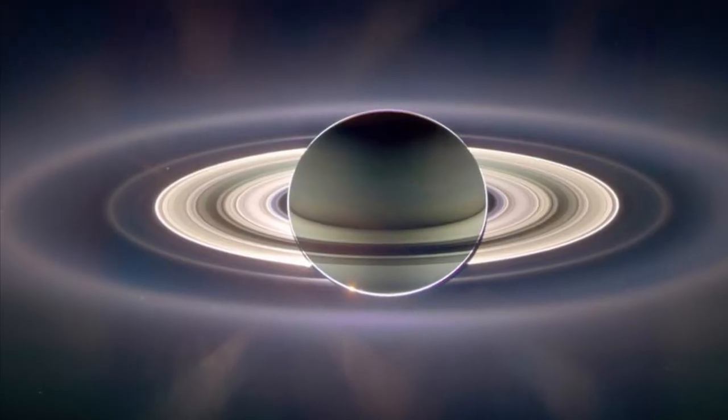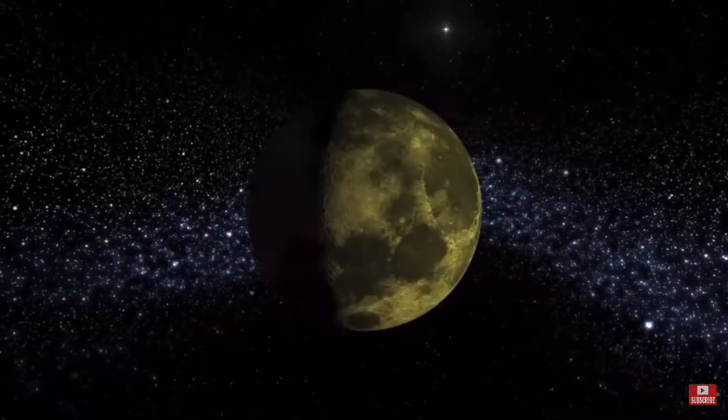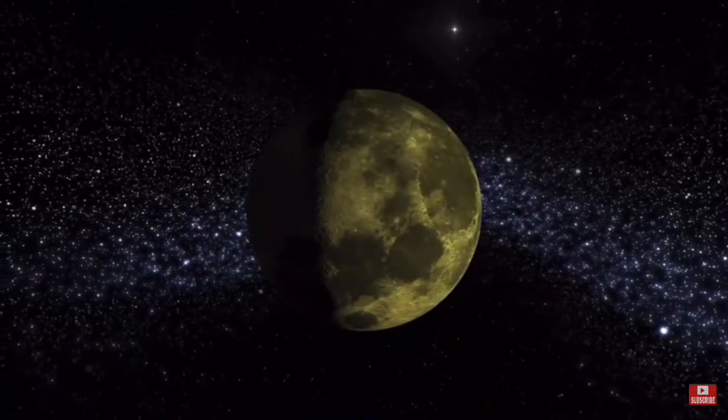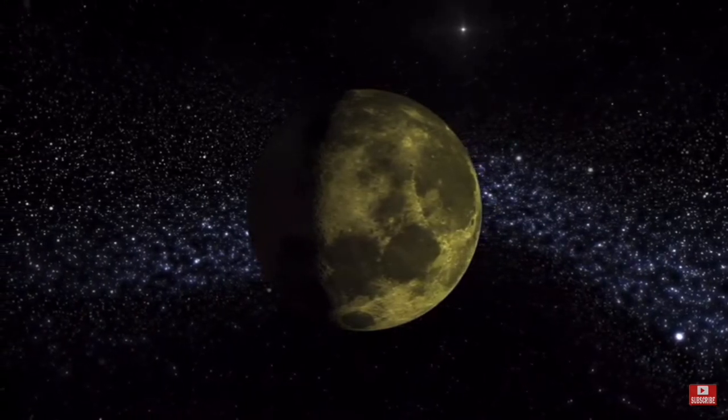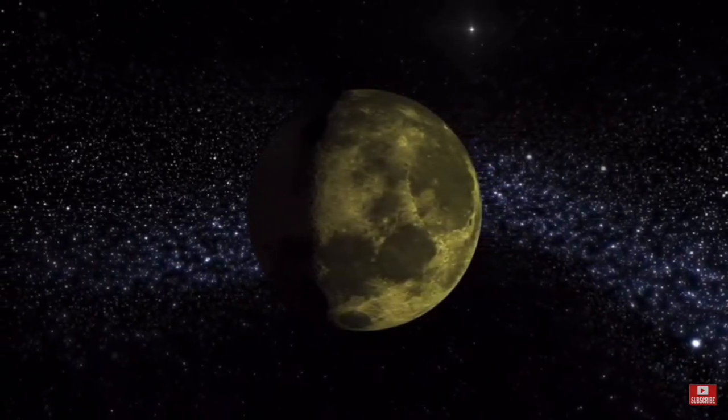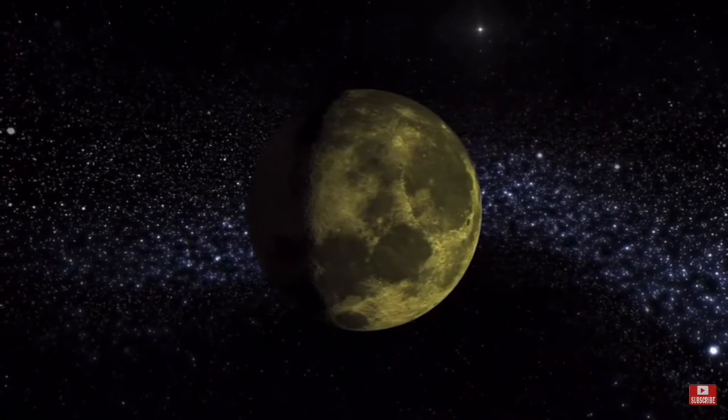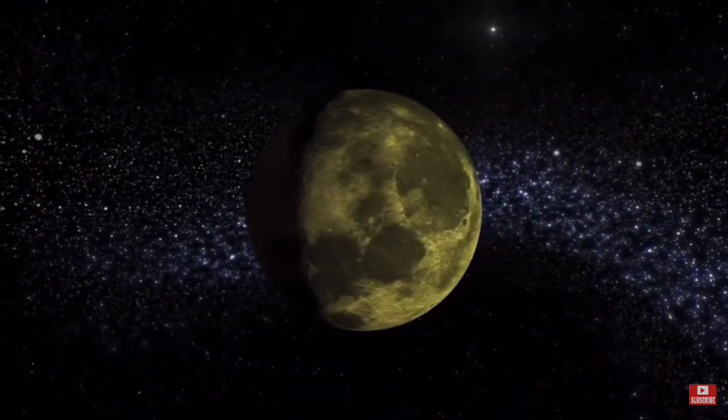First, we have moon destroyed to form rings of Saturn, which is about how a moon the size of Titan spiraled into Saturn and turned into Saturn's rings. Scientists believe the ice of the planet got turned into the rings, but the rocky core wasn't destroyed, so it left a ring of only ice.